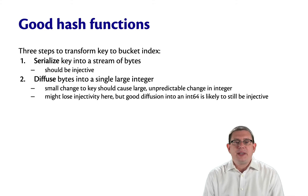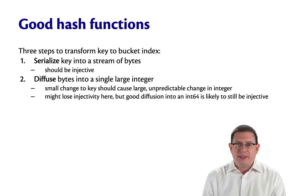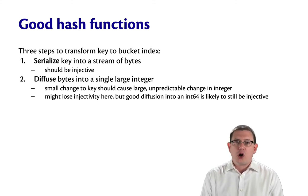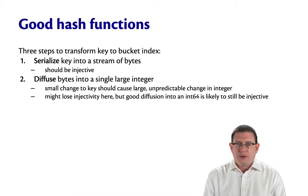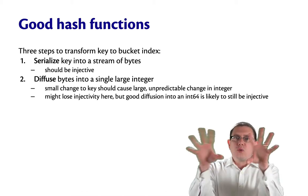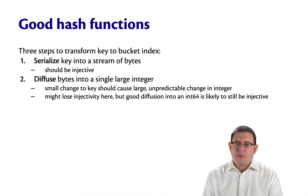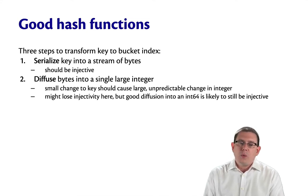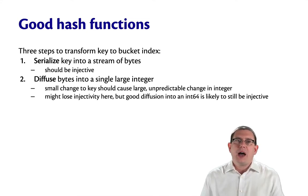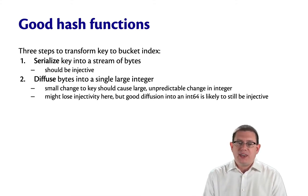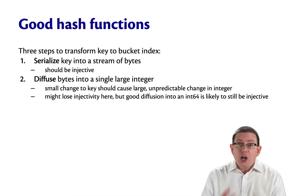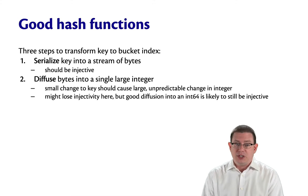The second step is to diffuse those bytes into a single large integer — like you're taking all of them and throwing them out into some sort of large integer. Here is where we want a kind of randomness: a small change to the key should result in a large, hopefully unpredictable change to what integer it gets diffused into.